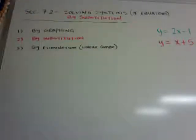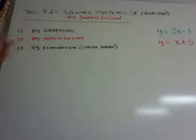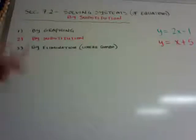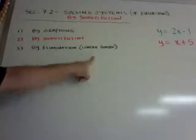Hi guys, this lesson is section 7.2, which is solving systems of equations by substitution. 7.1 was solving by graphing, 7.2 is solving by substitution, and 7.3 will be solving by elimination, otherwise known as linear combination or linear combo.